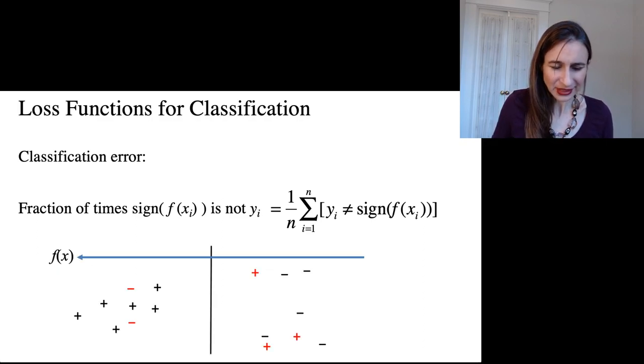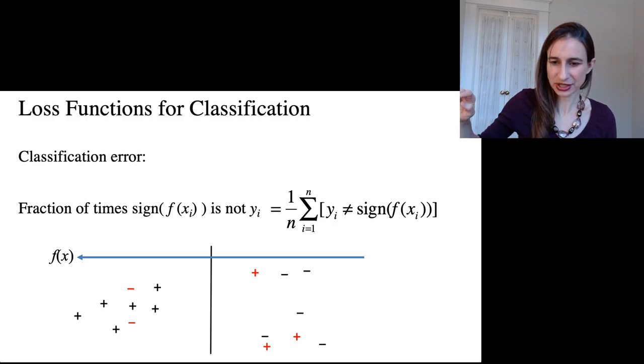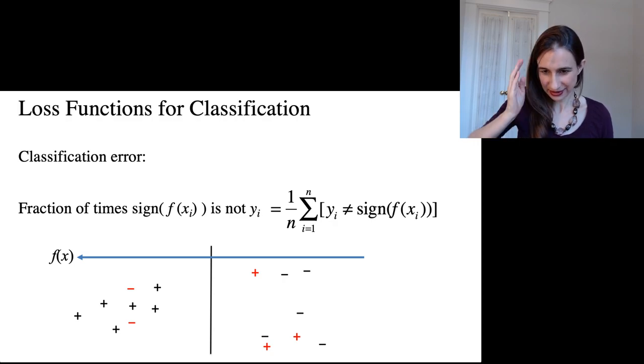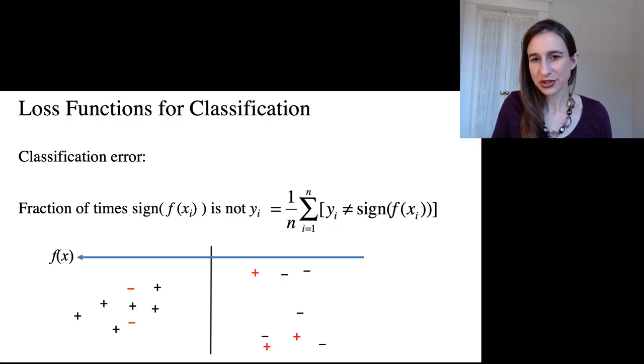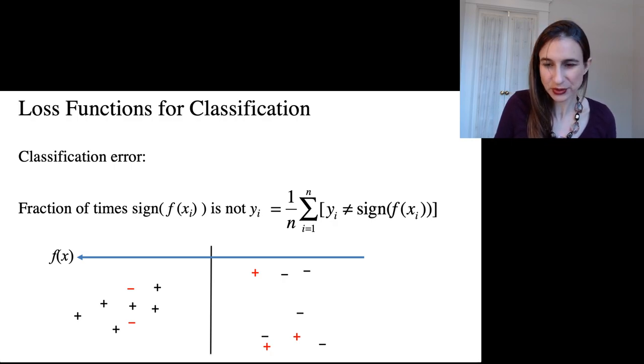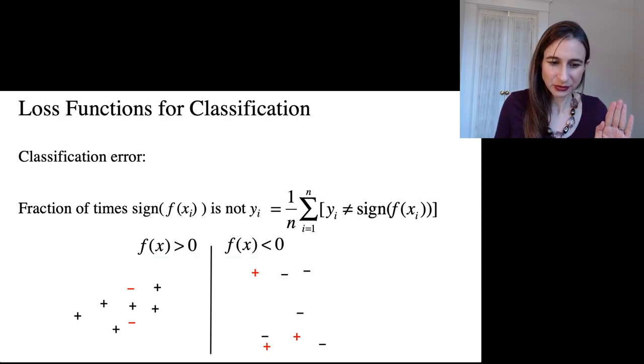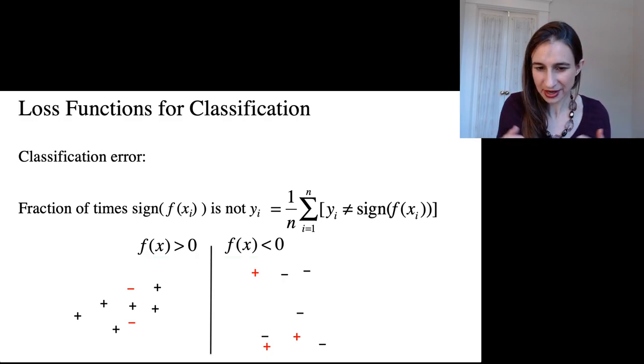Now I want to plot a function here. This function increases as you go to the left, and the decision boundary is this line in the middle. As you can see, the function missed a few points. Those points are in red. Those are misclassified. So right now, the way I have everything plotted, I have f being positive on one side, f being negative on the other side.